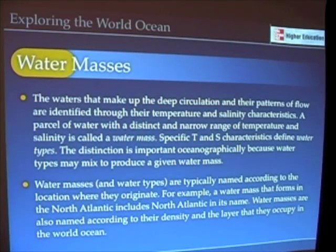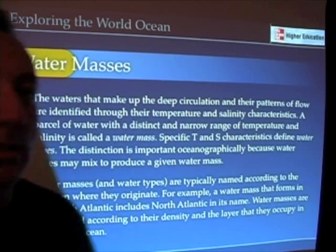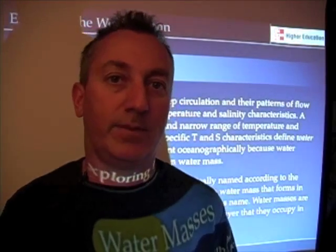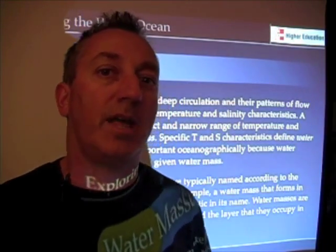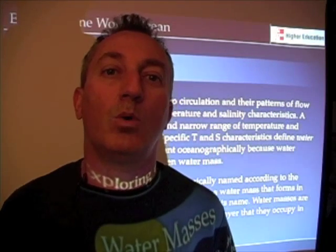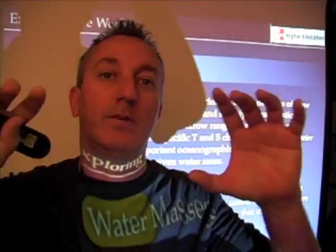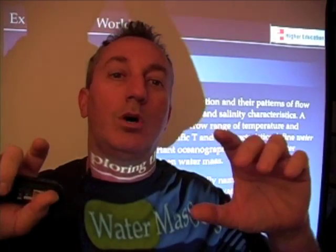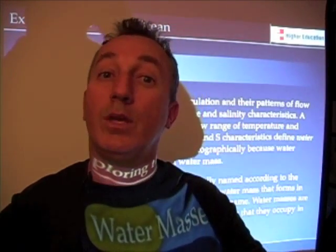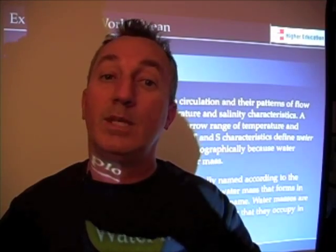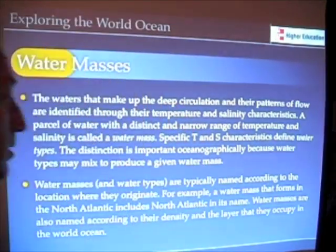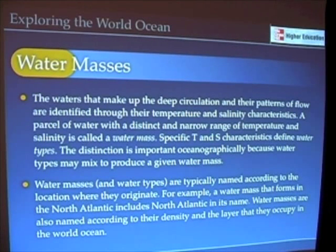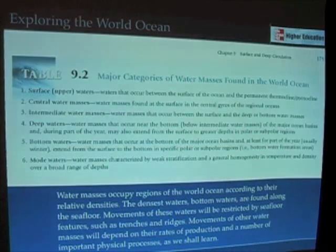Water masses are typically named according to where they originate. So if they originate in the North Atlantic, we call it a North Atlantic water mass; if they originate in the South Pacific, we call it a South Pacific water mass. We also name them according to where we find them — at the surface, intermediate depths, or deep in the ocean — calling them surface, central, intermediate, deep, or bottom waters. So we name water masses according to both the layer they occupy and where they originate.